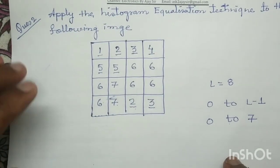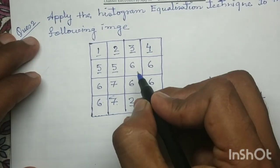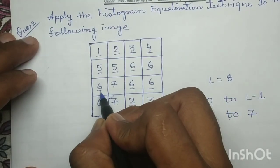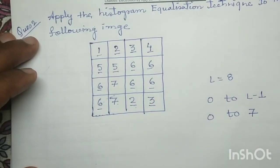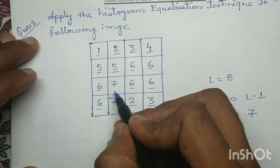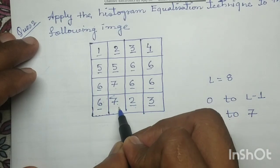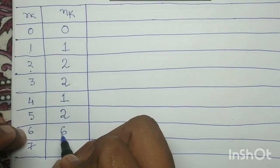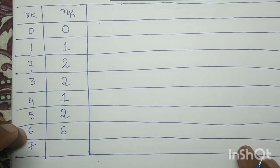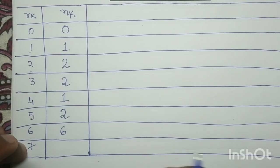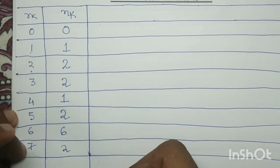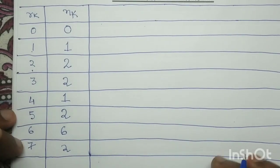Input gray level 6 is repeated 6 times and input gray level 7 is repeated only 2 times. So the number of occurrence of input gray level 6 is 6, and the number of occurrence of input gray level 7 is 2.